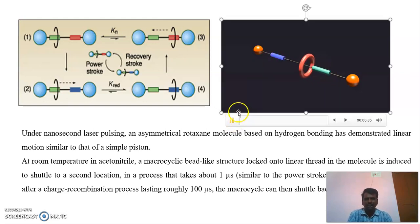If you allow laser light to fall on these, the ring starts to move here and there. By using this light, we can make artificial molecular motors like rotaxanes and use them for a lot of biological systems.